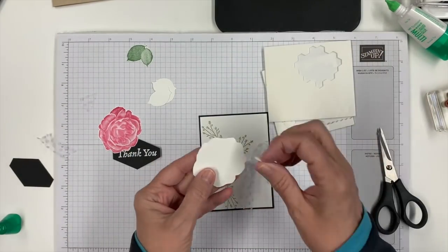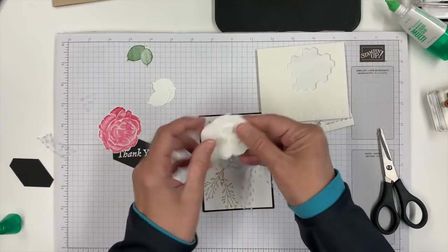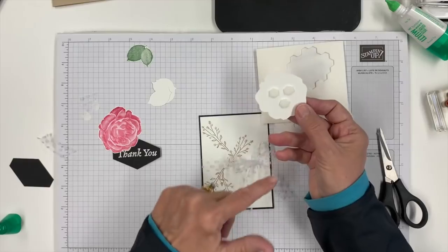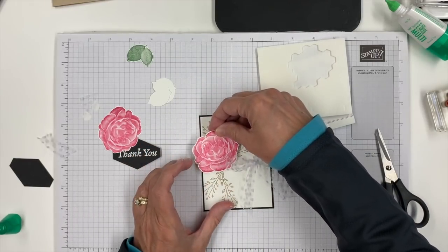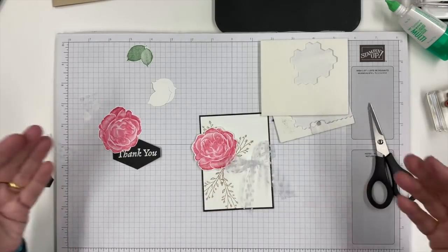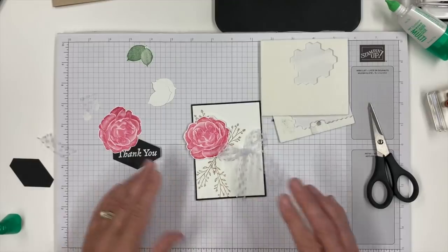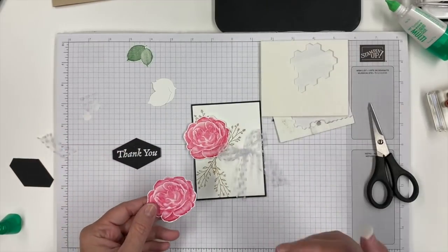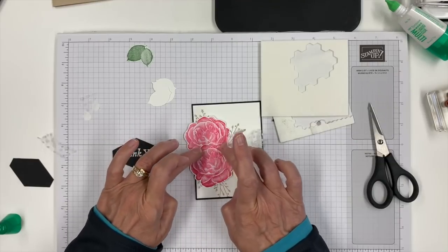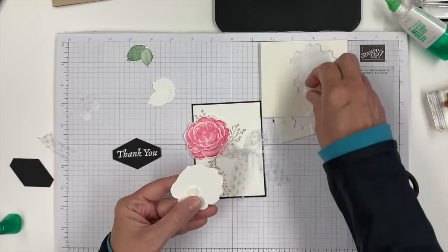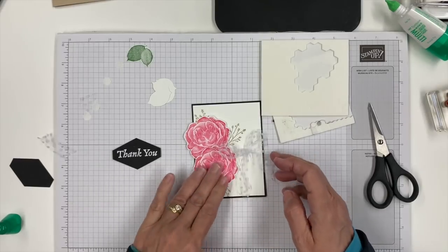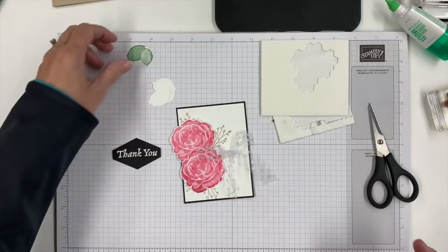We got our parts and pieces, so we'll start with one of the flowers. Notice I'm putting my dimensionals pretty much in the center, because once I stick this down and my other flower down, I'm going to tuck the leaves underneath. If those dimensionals were right along the edge, it'd be harder to tuck the leaves underneath. My second rose is going to overlap a little bit, so I don't want any dimensionals up where it's going to overlap. These will come down a little lower but still leave room to tuck some leaves in.